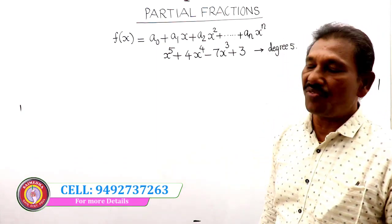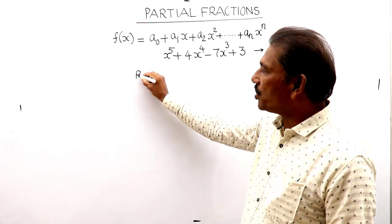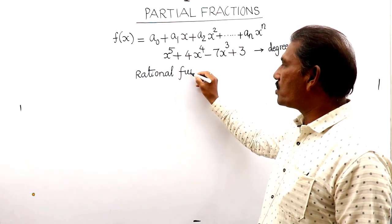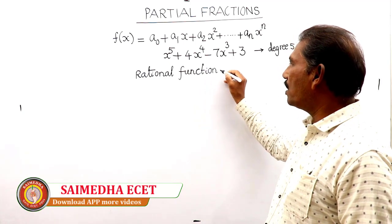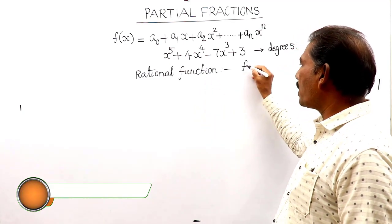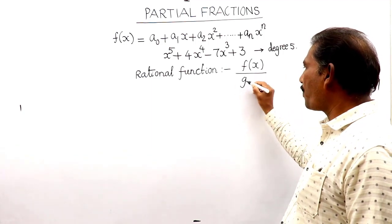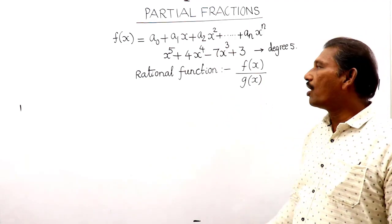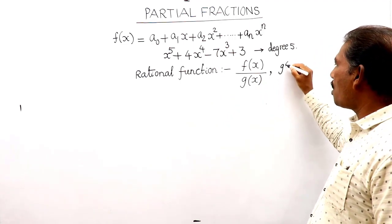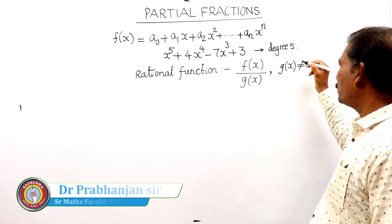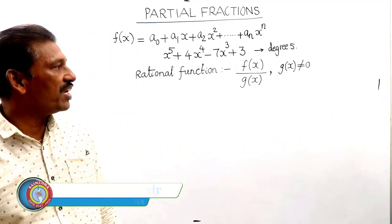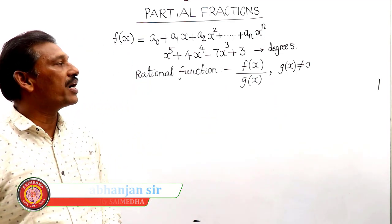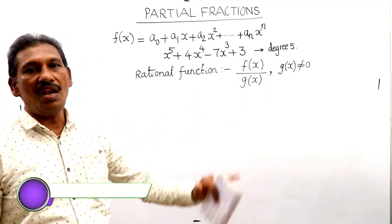To understand partial fractions, first we consider a rational function. A rational function is a function in the form f(x) divided by g(x), where f(x) and g(x) are polynomials. One important condition is that g(x) should not be equal to zero, because something divided by zero is not defined.